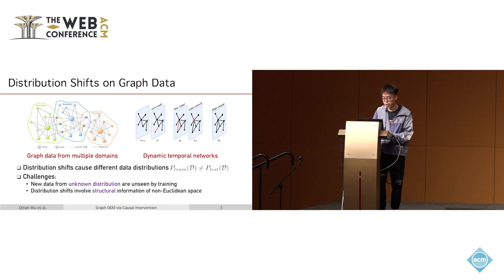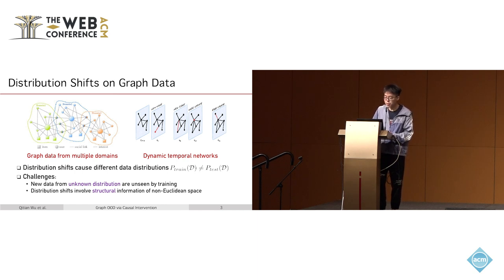There are many technical challenges in handling distribution shifts in graph data. One challenge is that testing data from a new environment can be strictly unseen during training. Additionally, distribution shifts on graphs may involve structural information in non-Euclidean space, making this a particularly difficult problem.